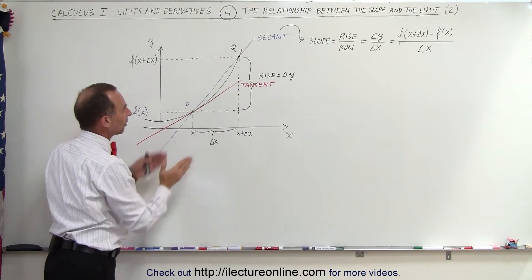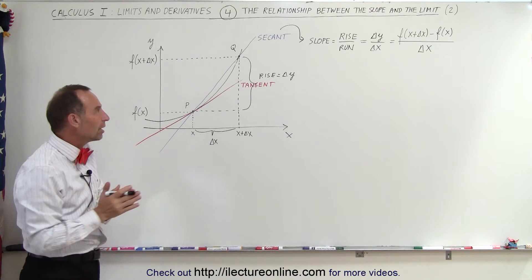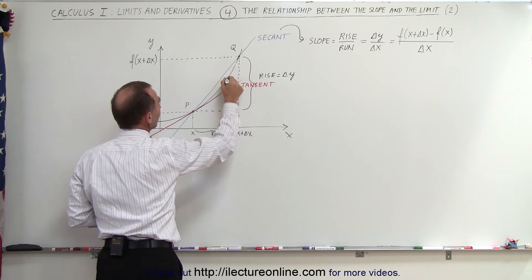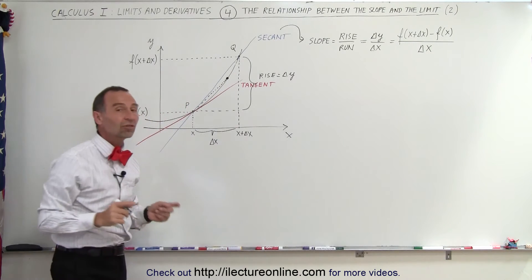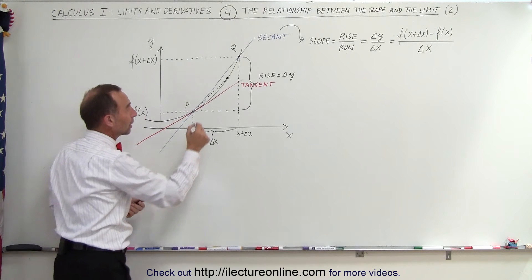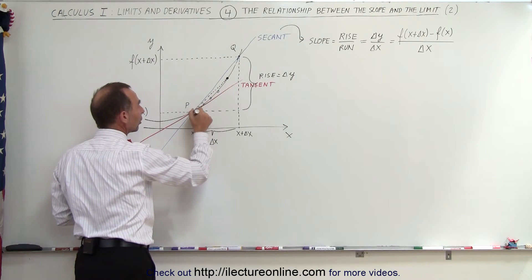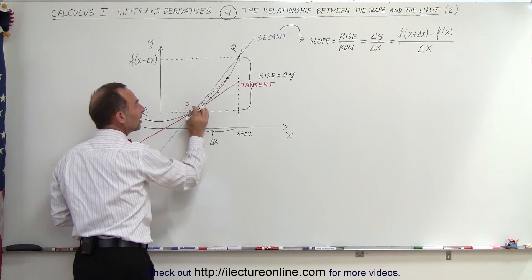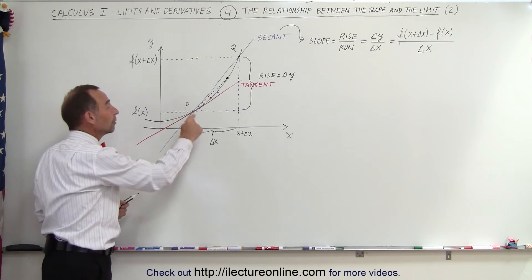You can see that the slopes are not quite the same between the tangent line and the secant line. But if I bring point Q in a little closer, the slope of the secant line becomes closer to the slope of the tangent line, and therefore closer to the slope of the function at point P. Bringing Q in closer and closer and closer, the slope of the secant line will much more closely resemble the slope of the tangent line.